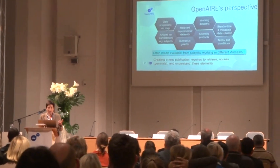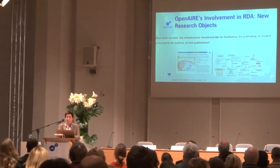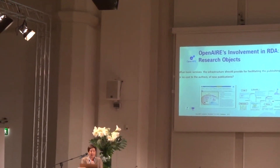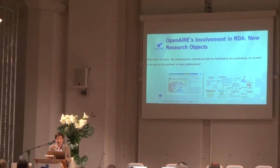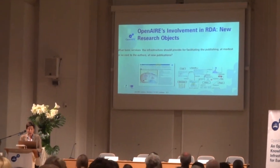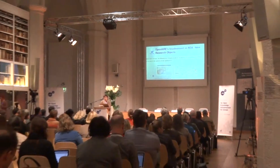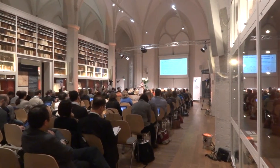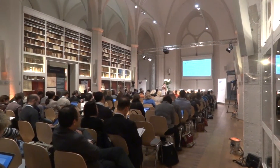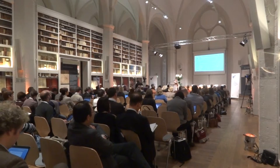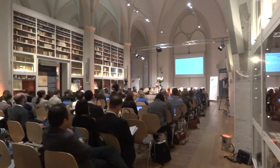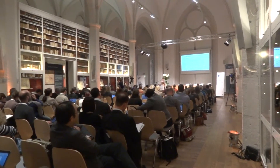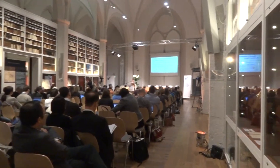In order to address this point, we are already thinking, for example, to propose in the context of ITA a new working group that will try to address which are the basic services that the infrastructure should provide for facilitating the publishing at modest or no cost to the author — because this is the focus of the infrastructure — for this new kind of applications. What we want to address in this working group is what are the basic facilities that the infrastructure should provide in order, for example, for an editor of a new journal for this type of object, to be able to create this new publication with minimized cost.